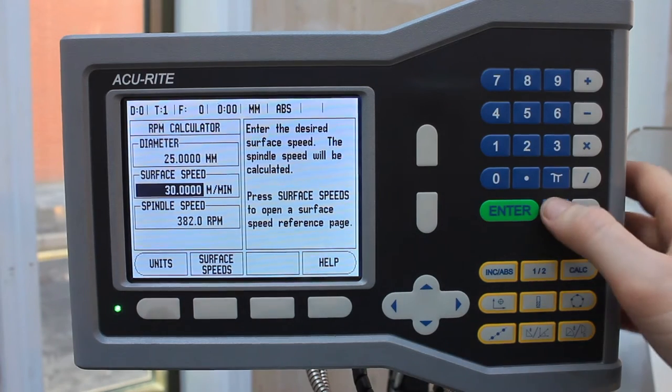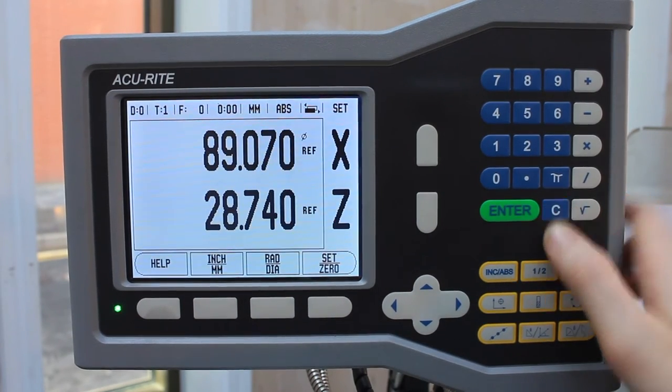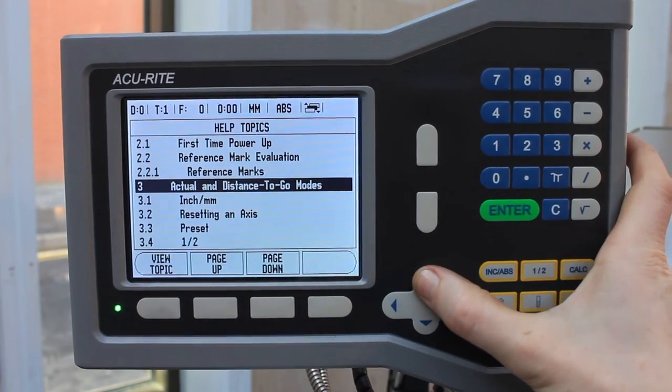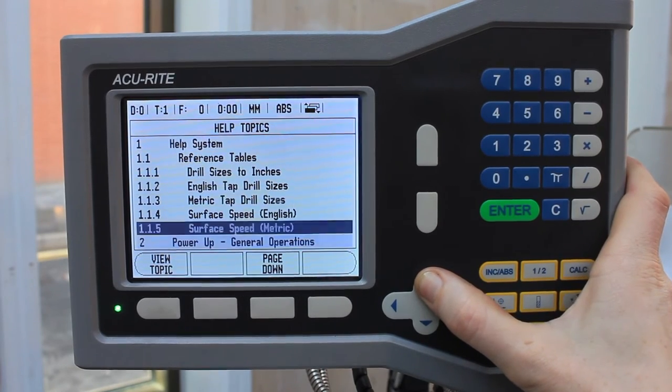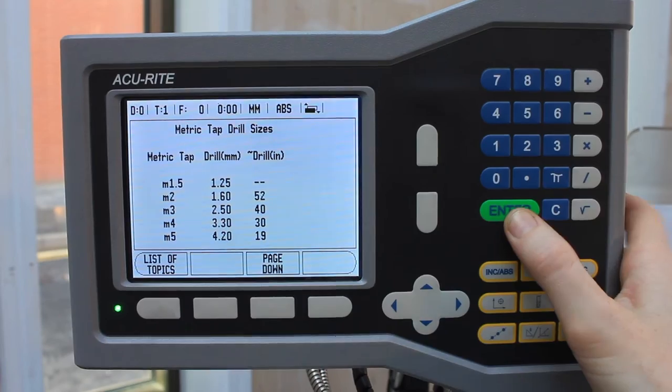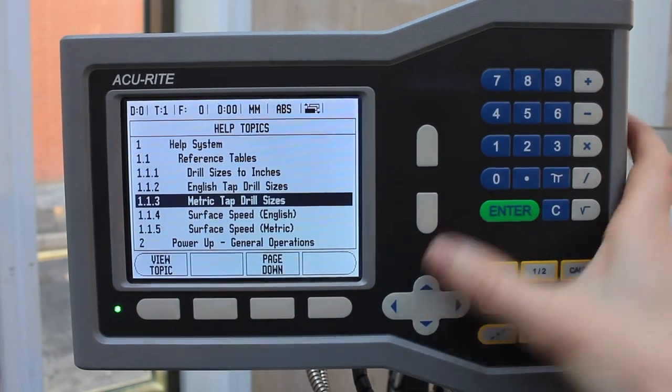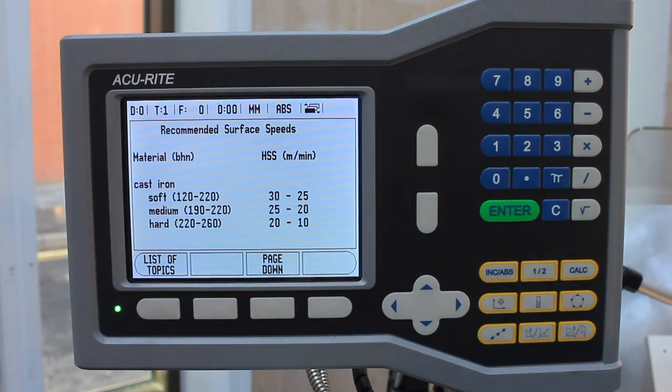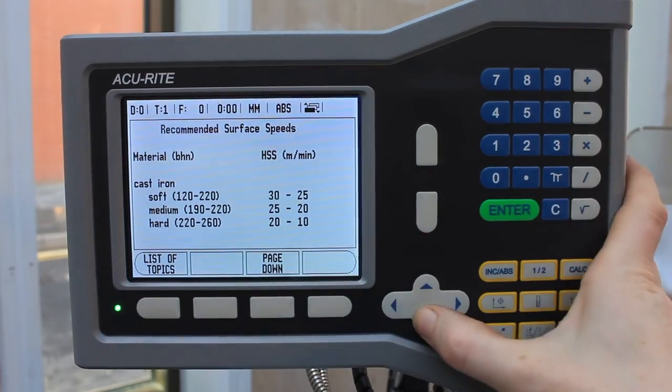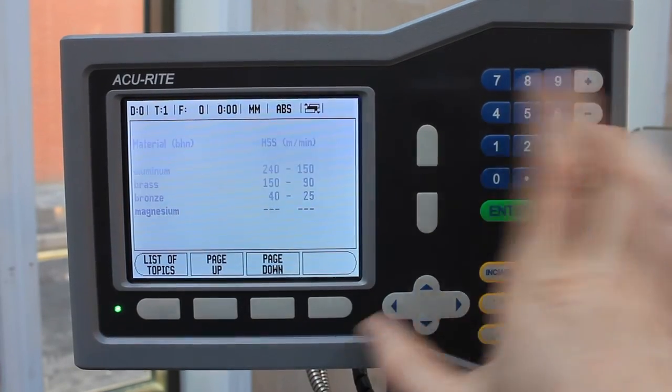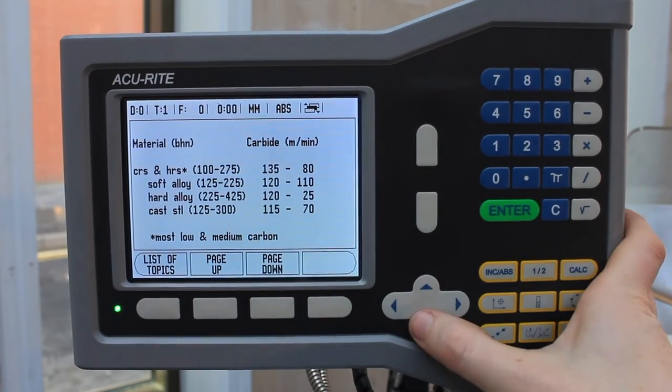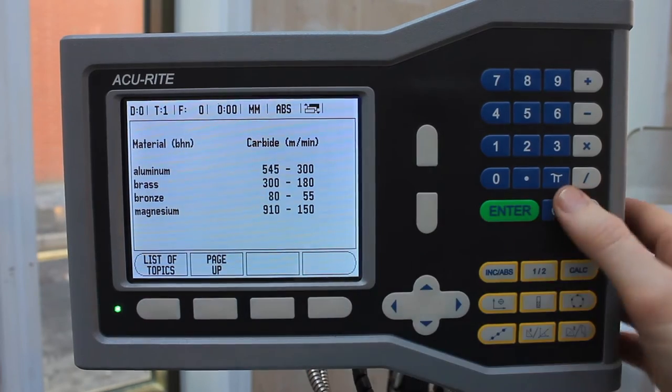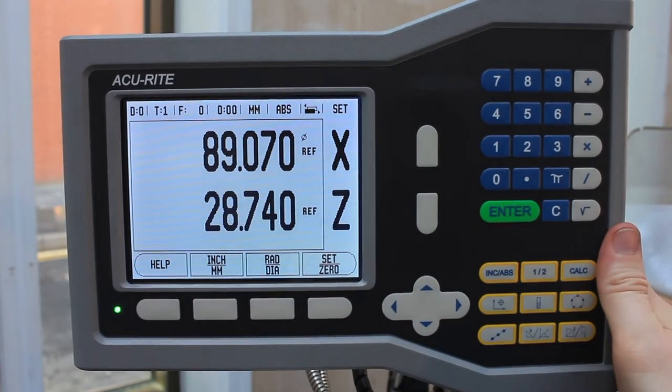Another really nice feature of these DROs is effectively you've got a juice book on the machine. If you hit the help button, list of topics, and go to the one section, not only do you have things like tapping drills, but you also have surface speeds. We're going to be using carbide tips, so we page past the high speed steel until we hit carbide, and then we've got cast iron, a range of steels, and some different materials such as aluminum and brass as well. It's all here on the display with a range of calculators to help you.